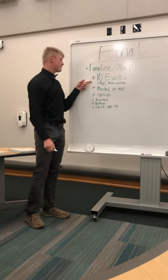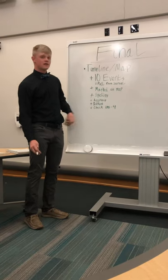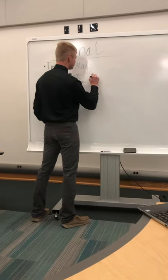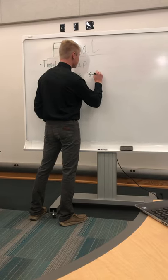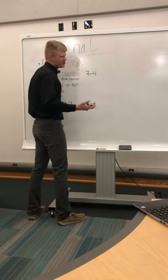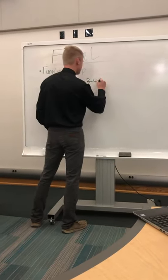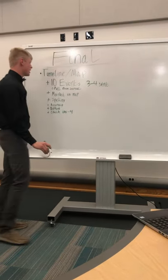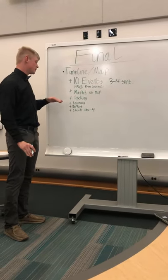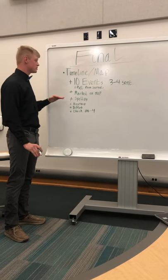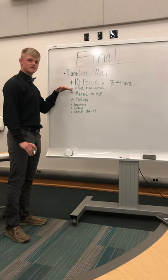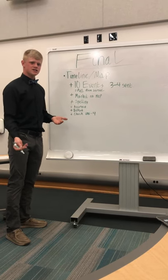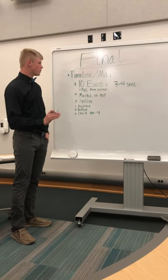First, we're going to have ten events. For your ten events, I want you guys to have about three to four sentences. You can go above that, but I don't want any more than like a paragraph — so three to four sentences. I want those to have good spelling, and I want you guys to have the dates on each of these events. You guys can pull this information from the journal, which should be easiest, or you can use your book.